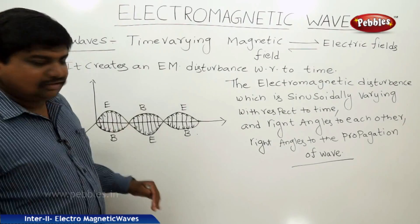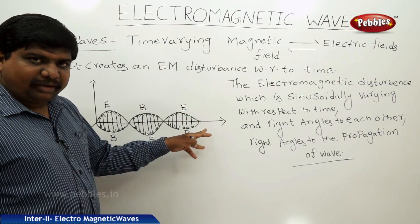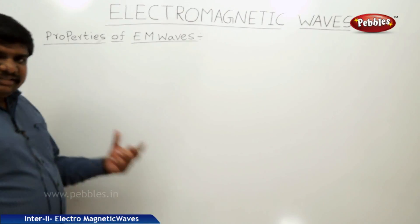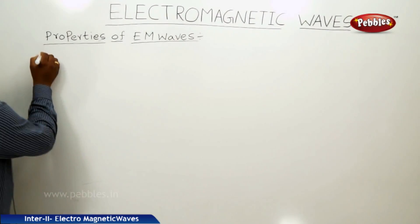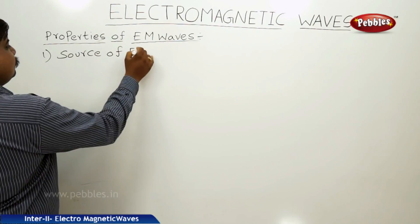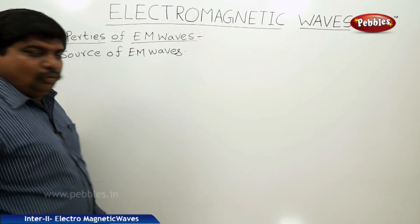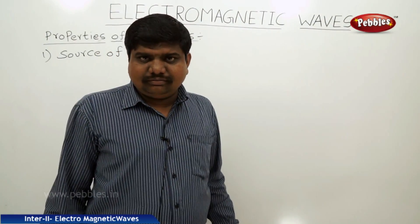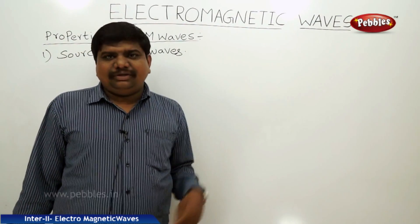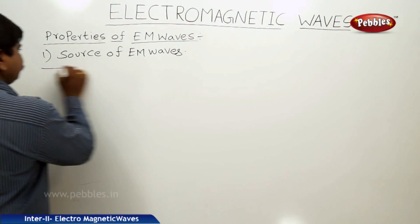This is the clear definition of an electromagnetic wave. Now we will see what are the important features and formulas associated with these electromagnetic waves — the properties of EM waves. The first property is the source of EM waves. Accelerated charged particles and oscillating circuits are the sources of EM waves.